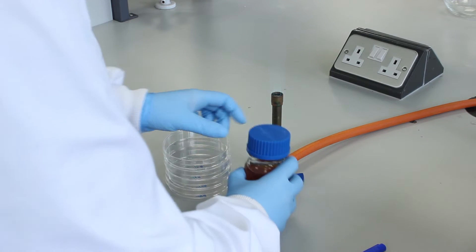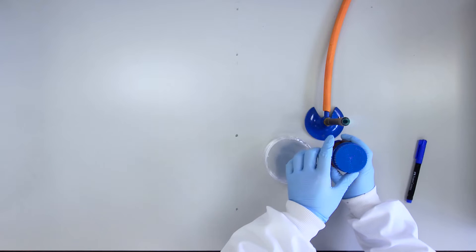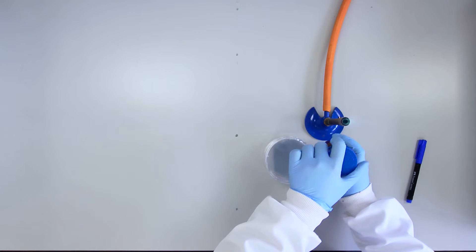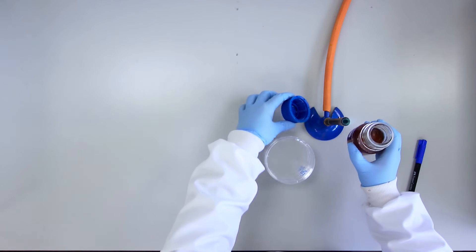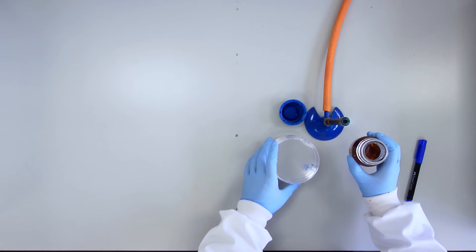Open the bottle and flame the neck of the bottle. Here you can place the cap down with the open side up in the updraft of the Bunsen flame.